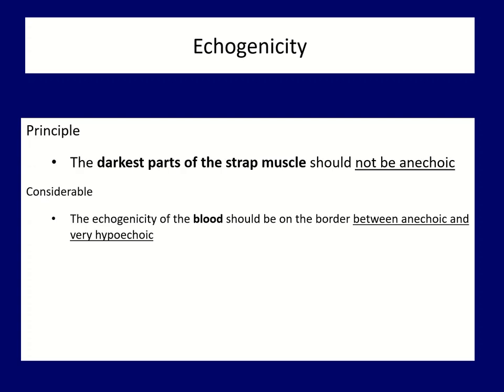The second task is the appropriate setting of the echogenicity. Essentially, it means that the darkest part of the strap muscle running ventral to the thyroid should not be anechoic, that is not without echoes.